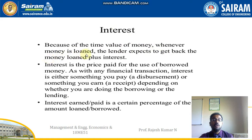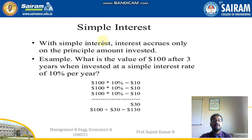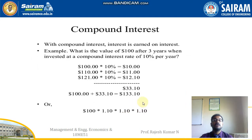Because of the time value of money, whenever money is loaned the lender expects to get back the money loaned plus interest. Interest is the price paid for the use of borrowed money. As with many financial transactions, interest is either something you have to pay (a disbursement) or something you have earned (a receipt), depending on whether you are doing the borrowing or the lending. Interest earned or paid is a certain percentage of the amount loaned or borrowed. With simple interest, the interest accrues only on the principal amount invested. For example, what is the value of 100 dollars after three years at 10% simple interest? It is 10 per year for 3 years, which is 30, so the total is 130 dollars.